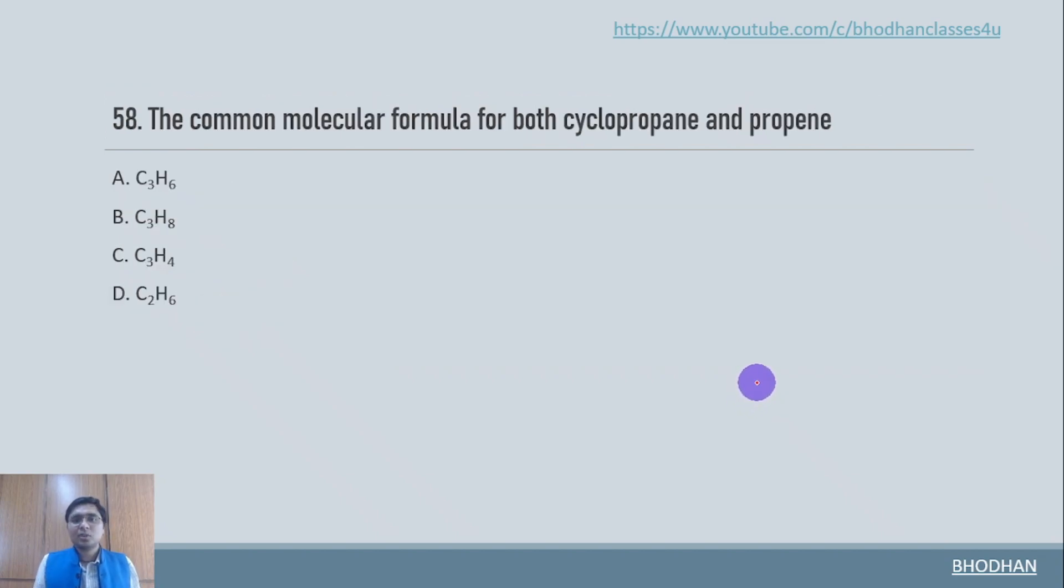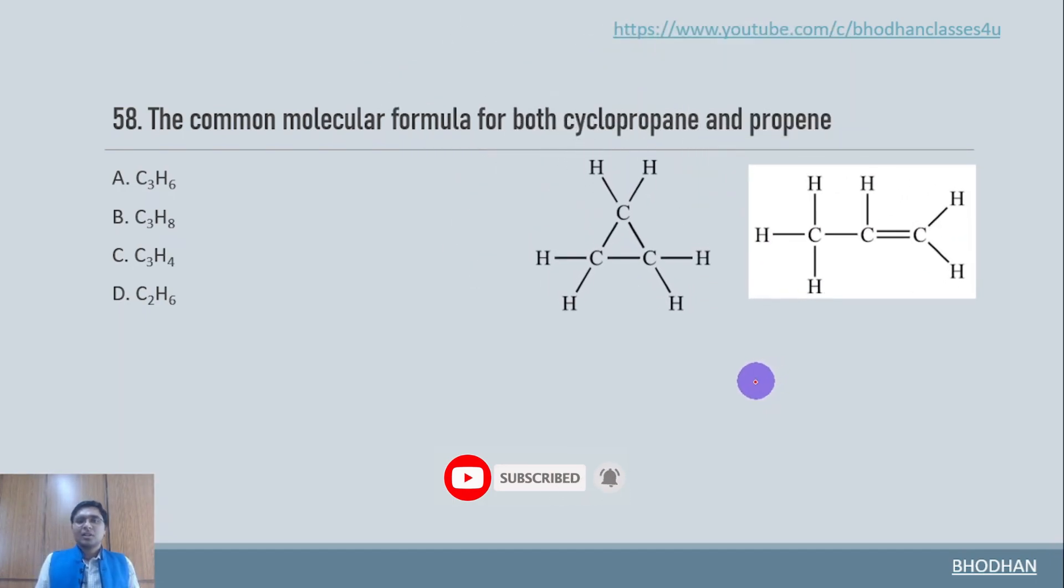The common molecular formula for both cyclopropane and propene. Now here is the structure. Cyclopropane has got three carbon atoms. So the formula is going to be C3H6 and same is the case with propene as well.